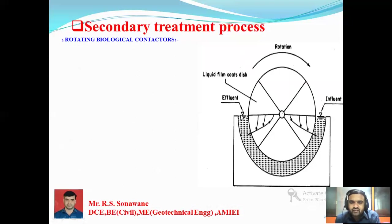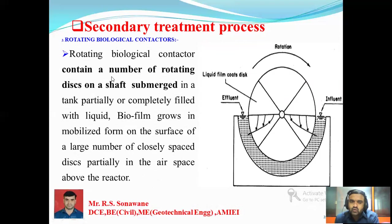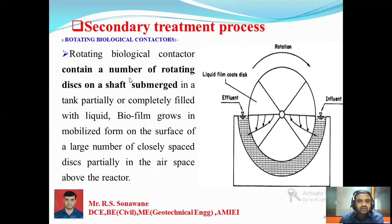The rotating biological contactor contains a number of rotating discs on a shaft, submerged in a tank partially or completely filled with liquid. A biofilm develops on the surface of the large number of closely spaced discs that are partially submerged in the reactor. As the discs rotate, oxygen is mixed into the biofilm, allowing biological treatment to occur.